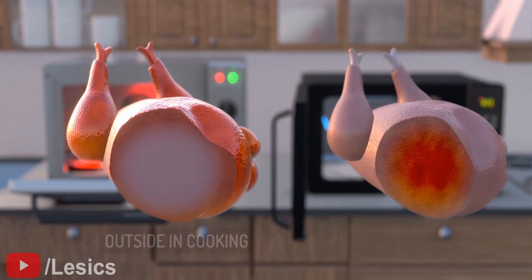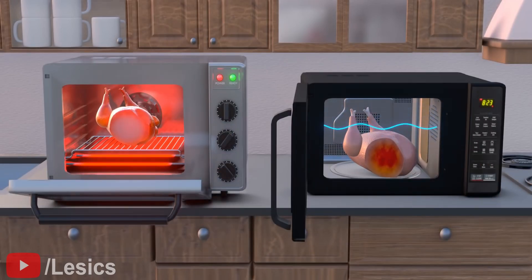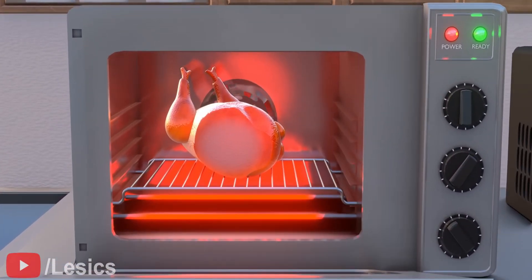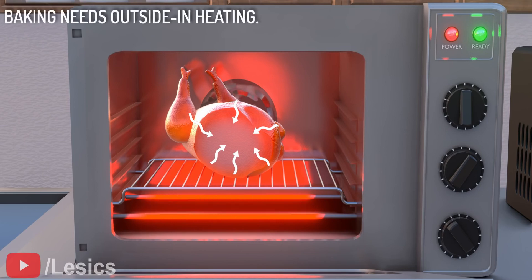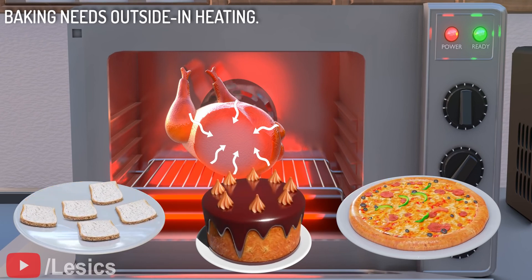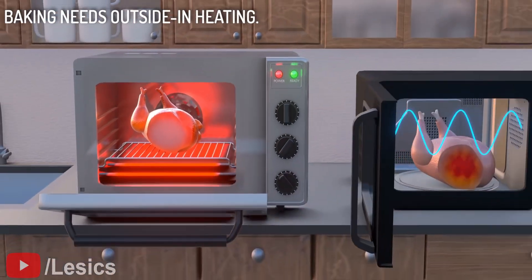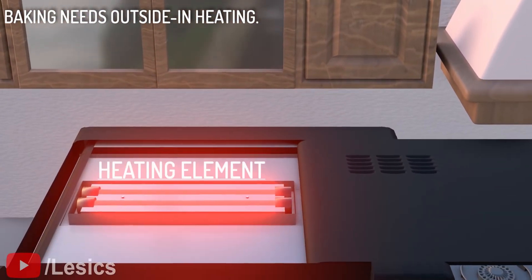The convection method cooks food from the outside in as opposed to the inside out. This is because the heat energy has to travel from outside to inside. But this method can be useful on some occasions. When you need food with a crisp surface and a soft interior or baking, the convection heating method is preferred. Due to this reason, modern microwave ovens come with a convection option for baking purposes.